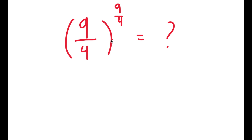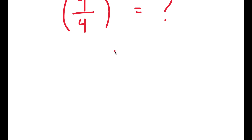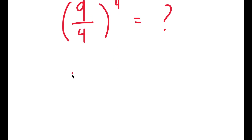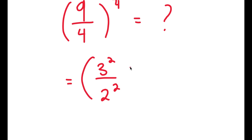In this video, I'm going to be solving the problem 9 over 4 to the power of 9 over 4. To solve this, what I'm first going to do is rewrite 9 over 4 as 3 squared over 2 squared. So now I have 3 squared over 2 squared to the power of 9 over 4.